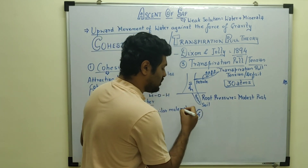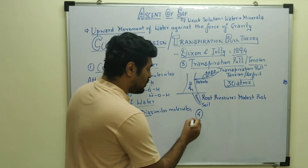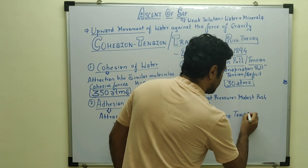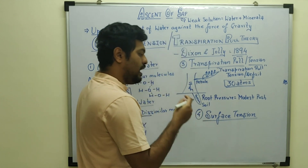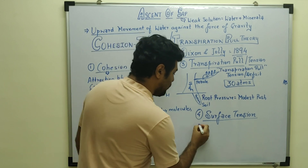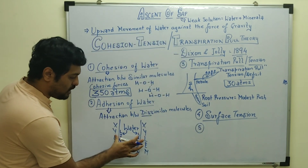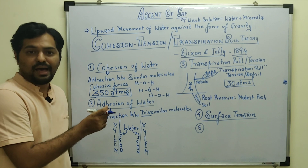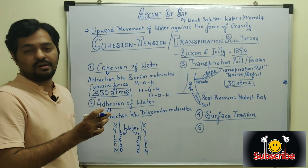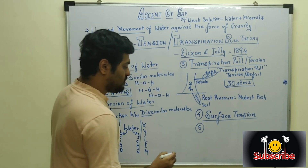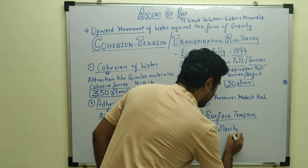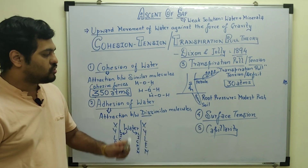Other factors responsible for ascent of sap include surface tension between water molecules, which also helps maintain continuity of the water column. Additionally, the narrower the lumen of the xylem vessel, the greater the rise of water — this is the property of capillarity, or capillary action.